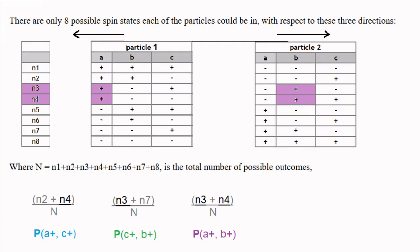N2 plus n4 plus n3 plus n7 is greater than or equal to n3 plus n4. Necessarily so, since n3 and n4 occur on both sides of this inequality, and all the quantities are positive. Therefore, P(a,c) plus P(c,b) is greater than or equal to P(a,b).